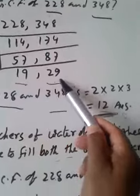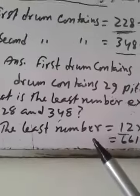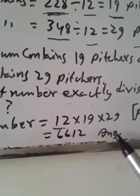So, the least number 12 multiply 19, 6,612. Thank you.